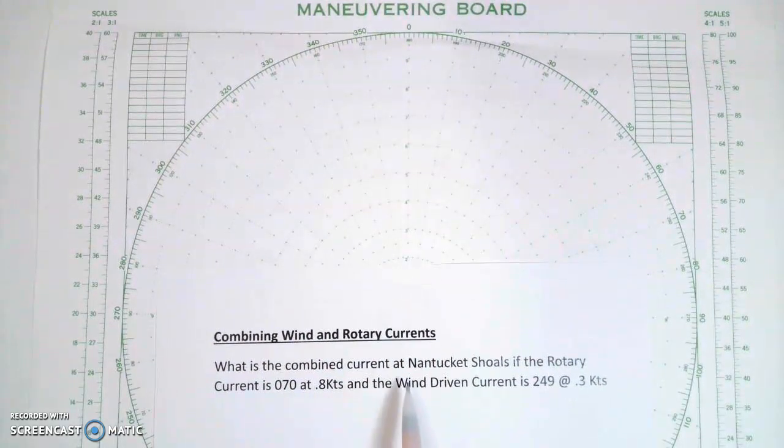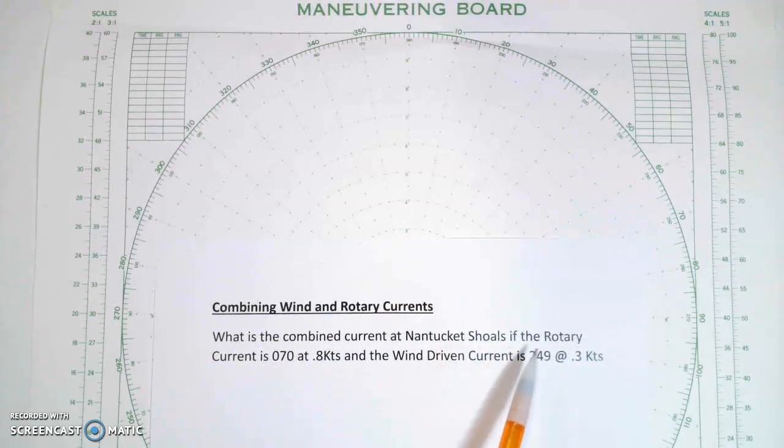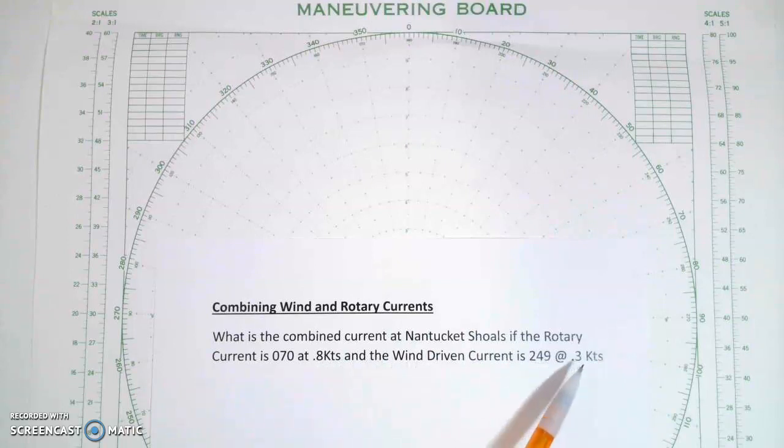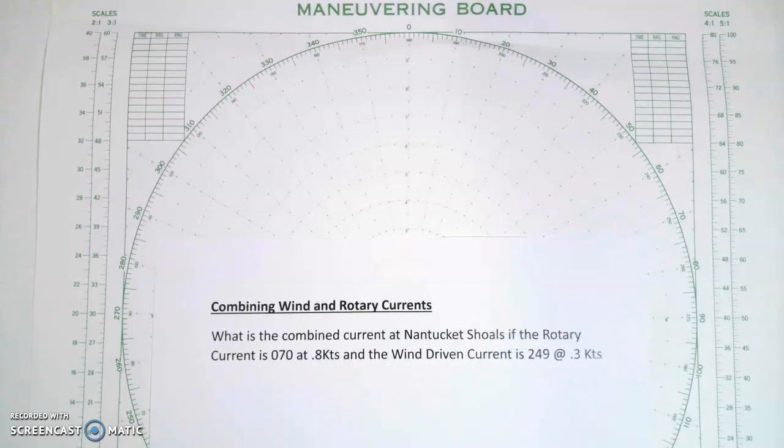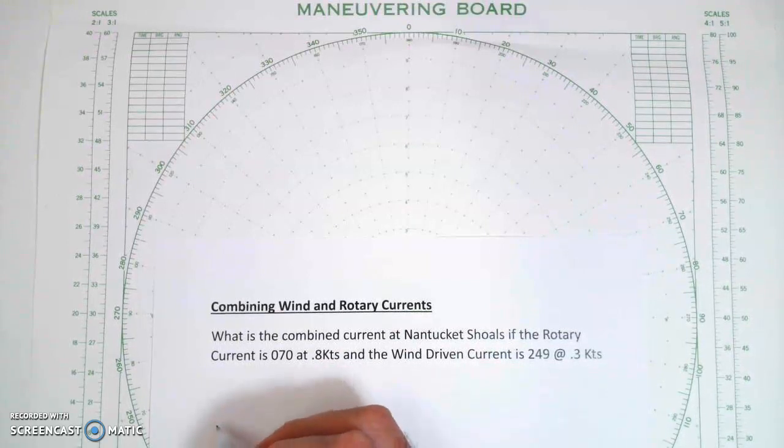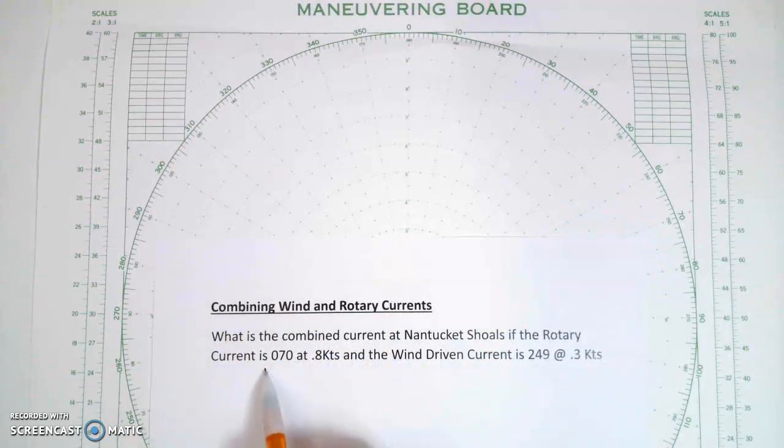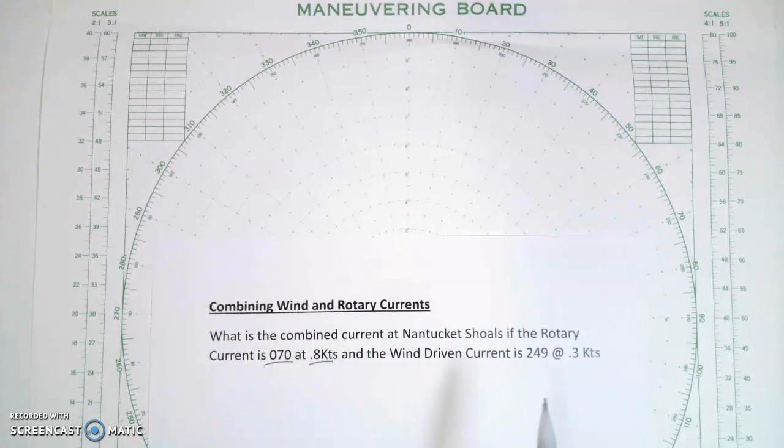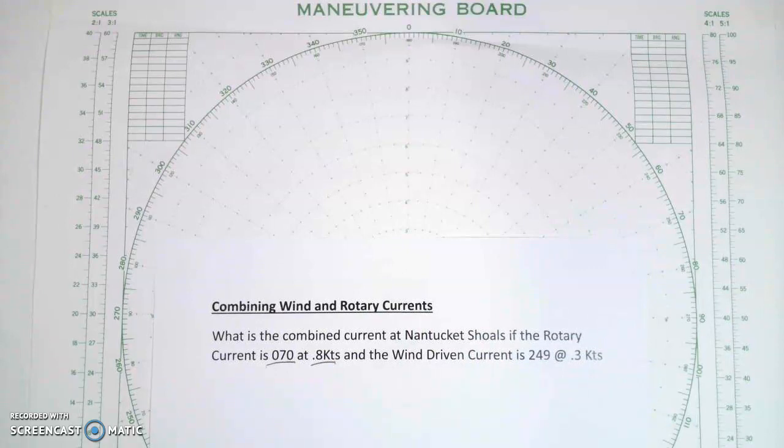So what is the combined current at Nantucket Shoals if one of the currents, the rotary current, is 070 at 0.8 and the wind-driven current is 249 at 0.3? Now remember, with vectors, a current is a vector. It has direction and magnitude. So it has an orientation, in this case 070, and it has a speed. That's the magnitude 0.8.